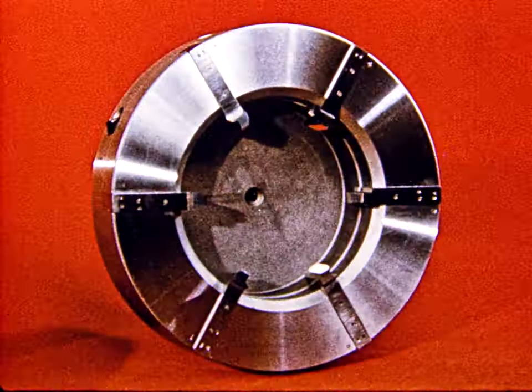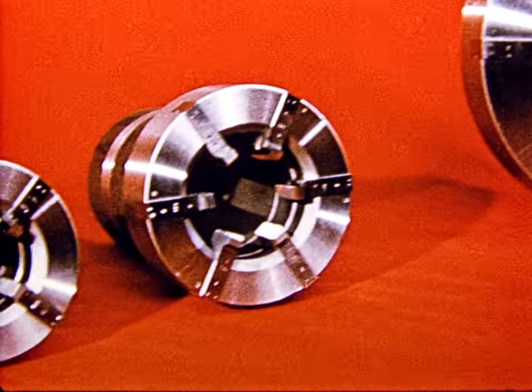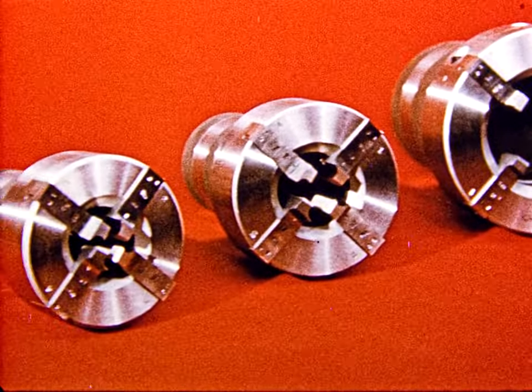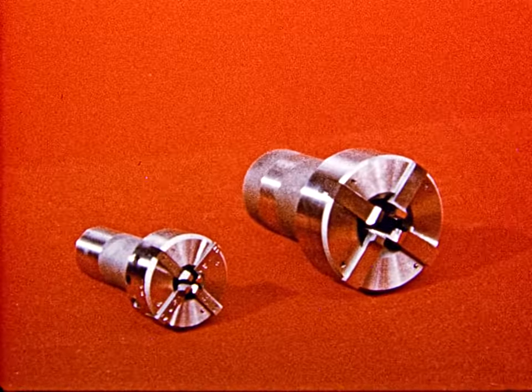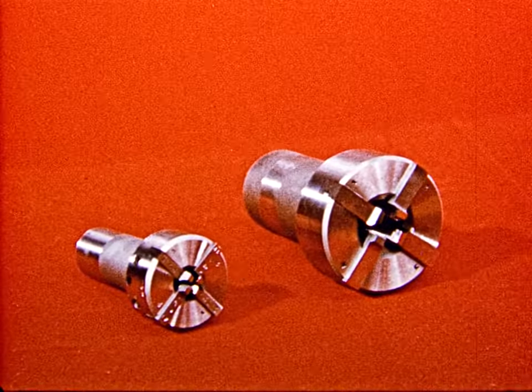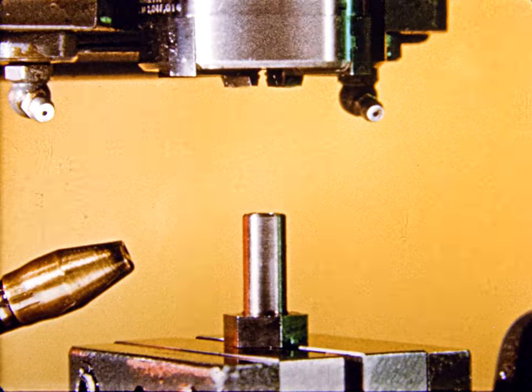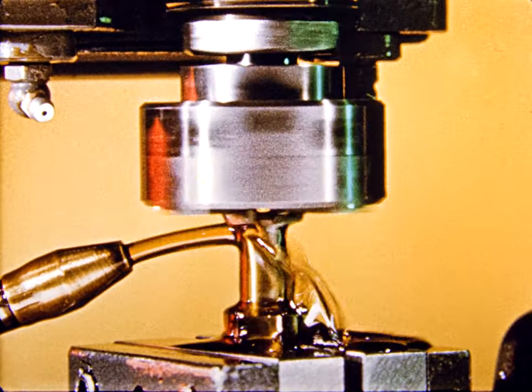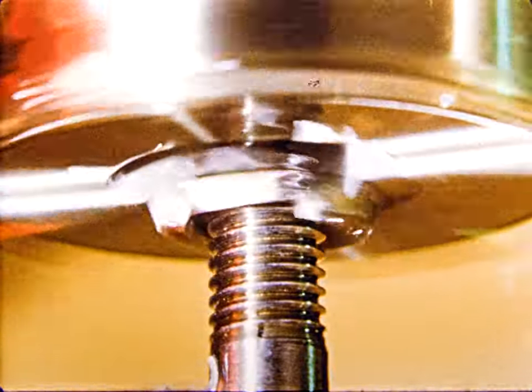Although the tools demonstrated so far have been of the self-opening variety, Geometric also produces a broad line of solid adjustable die heads. The model DJ, for example, is made in a wide range of sizes. From large tools capable of cutting threads six inches in diameter to this little five sixteenths model. Outstanding features of this fine tool are compact design, simple operation, positive chaser adjustment, close to shoulder threading, and important too, low initial cost.